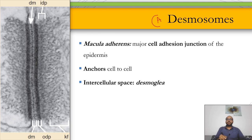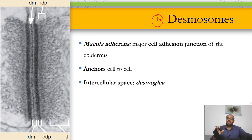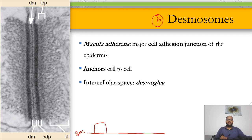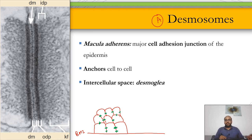Today we focus on desmosomes — adhesion molecules that bind two cells together on their lateral and upper walls. At the basal cell layer, cells are attached to their neighbors by desmosomes; as the cell proliferates and moves upward, desmosomes are present wherever the cell attaches to its neighbors. When desmosomes are lost, the cell turns into a spherical shape — these are called acantholytic cells.